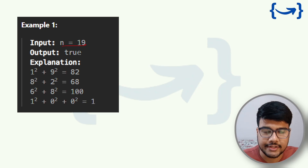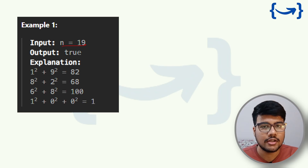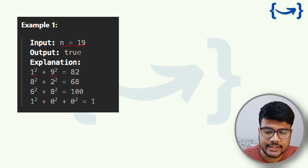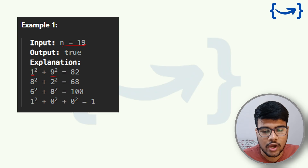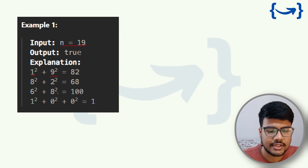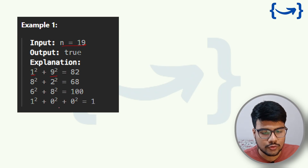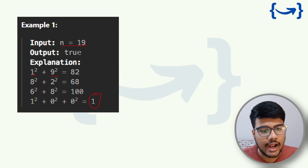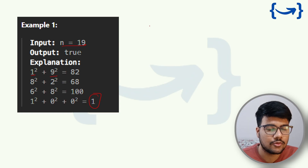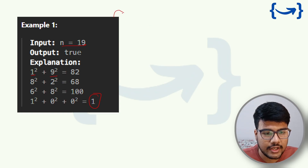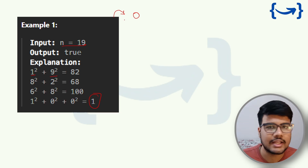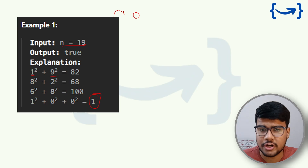For example, with n = 19: squaring 1 and 9 gives 1 + 81 = 82; then 8² + 2² = 68; then 6² + 8² = 100; then 1² + 0² + 0² = 1, which is the happy state. In a non-happy case, such as n = 0, whatever we perform we keep getting 0, which is never equal to 1, so we return false.